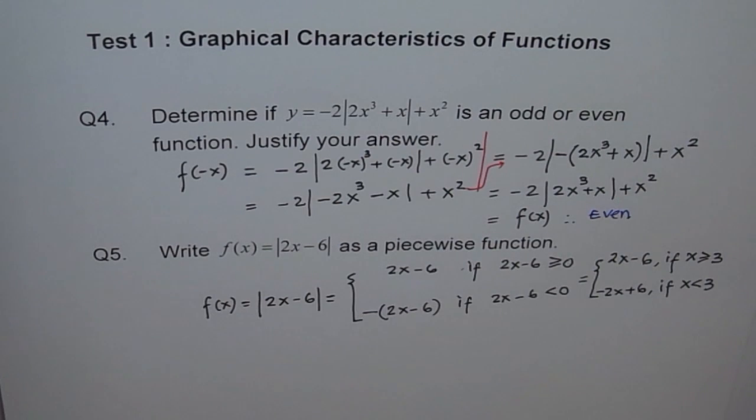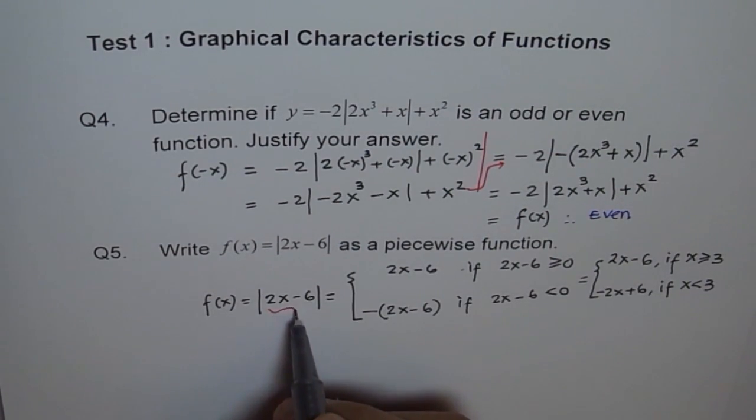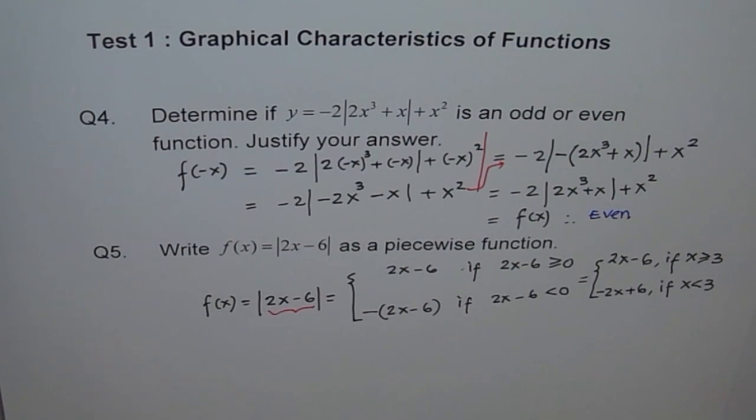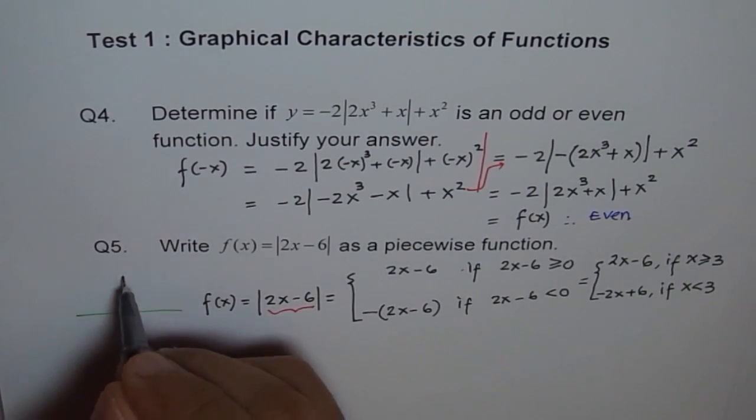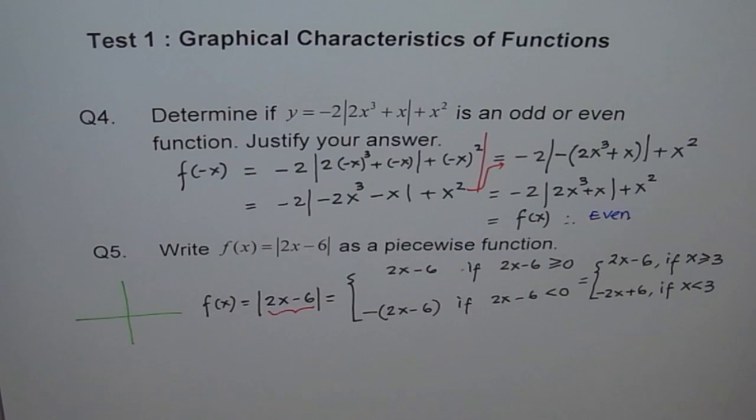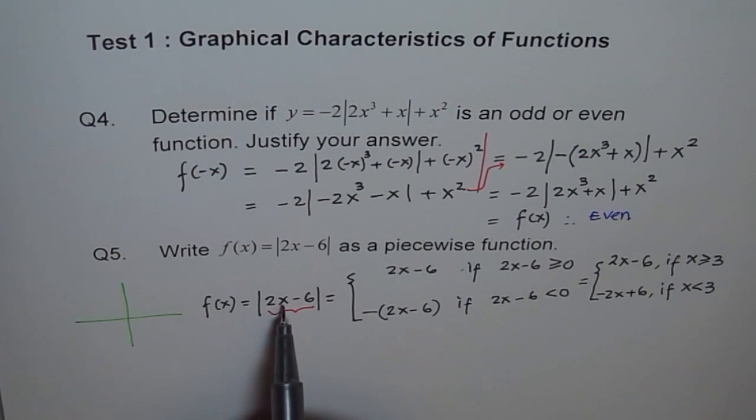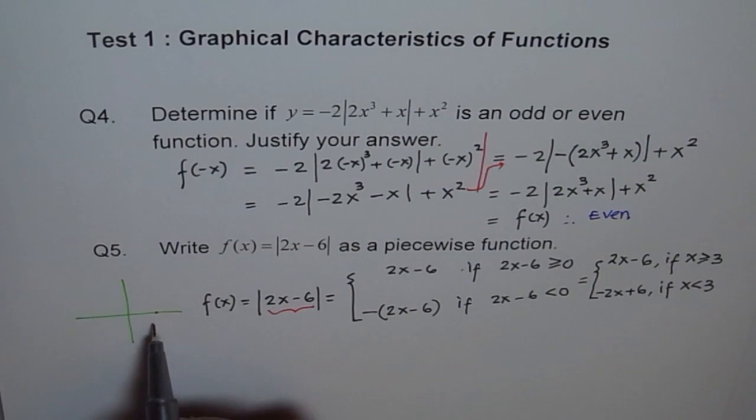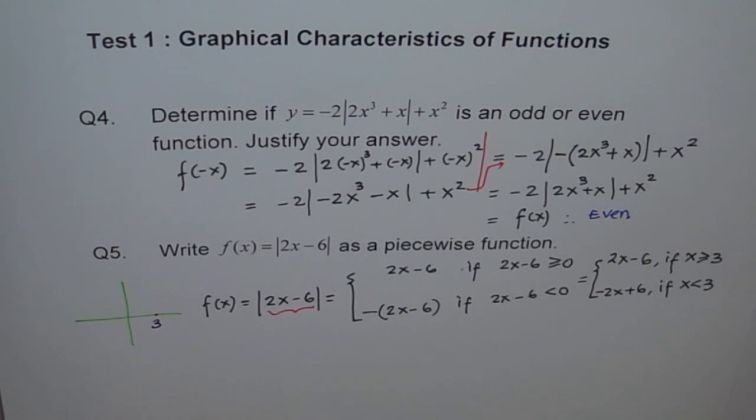So basically, what do we do here? We try to figure out when is this function negative? And in that domain, we make it negative, correct? So here, if you see, 2x minus 6, if I plug in a value 3 here, 2 times 3 is 6, and 6 minus 6 is 0. So at 3, let's say this is 3, right? So at 3, the function is 0.